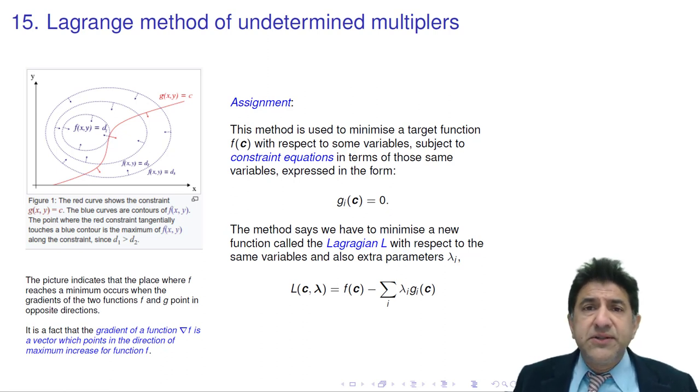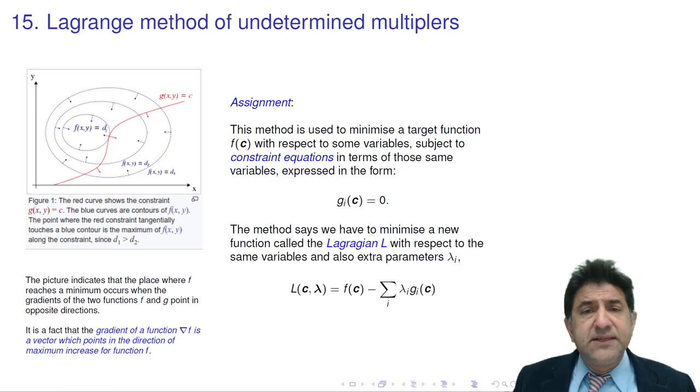However, suppose you have a constraint such as you want to minimize f of x squared plus y squared subject to a constraint that x plus y equals 3. You don't want to optimize the function with respect to all values, but only with respect to values such as x plus y equals 3. That's the constraint.